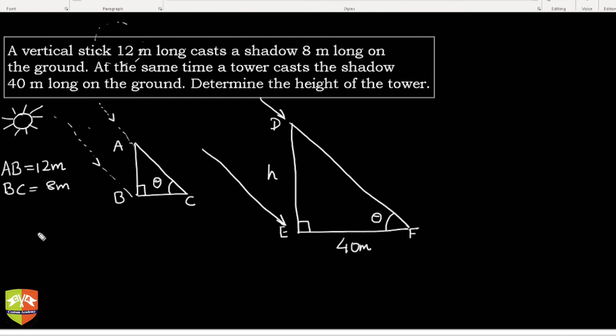If you see, in triangle ABC and triangle DEF, what do we get? Angle ABC is equal to angle DEF, equal to 90 degrees each.